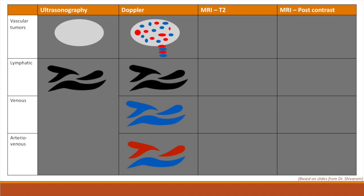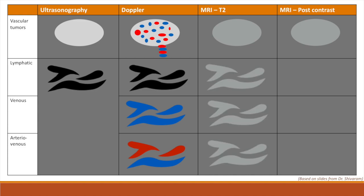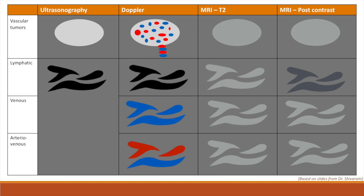MRI is not typically needed to confirm a diagnosis of vascular tumors such as hemangioma, although these lesions will show both T2 and post-contrast enhancement. For vascular malformations, we can look at T2 MRI and MRI post-contrast to confirm our diagnosis. Remember that T2 is fluid enhancing, therefore we expect all three types to be T2 enhancing. Because lymphatic malformations are not connected with arterial or venous supply, they will not enhance on post-contrast MRI, differentiating them from our other vascular malformations. Arteriovenous malformations will also be identifiable on MRI by their unique flow voids, which appear as small hypo-intense regions within the lesion due to high turbulent flow.